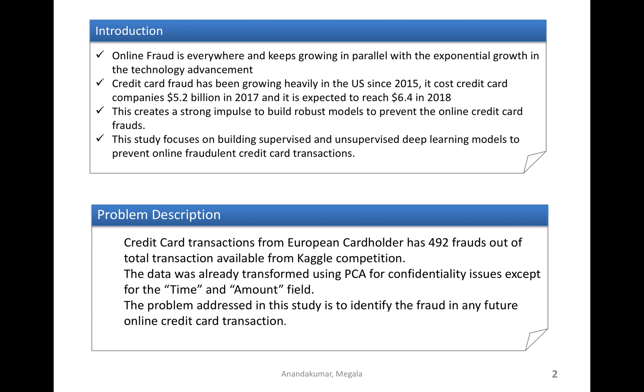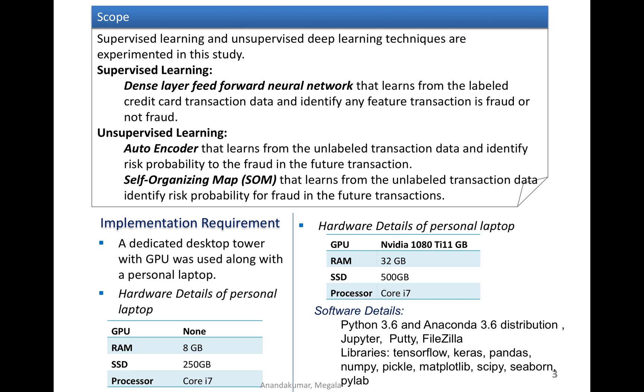I have considered the credit card data available in Kaggle. The scope of my project is developing both supervised learning models and unsupervised learning models. I have built dense layer feedforward neural network and I have developed autoencoder and self-organizing map.